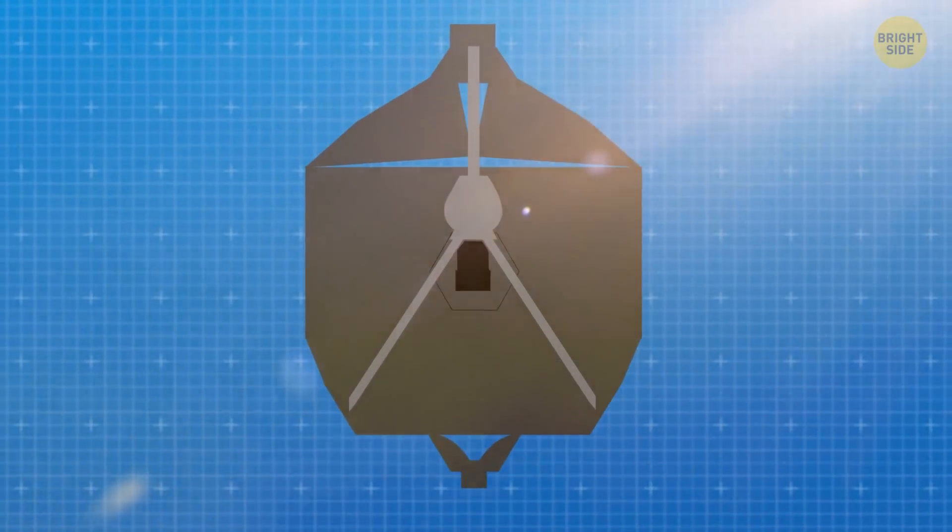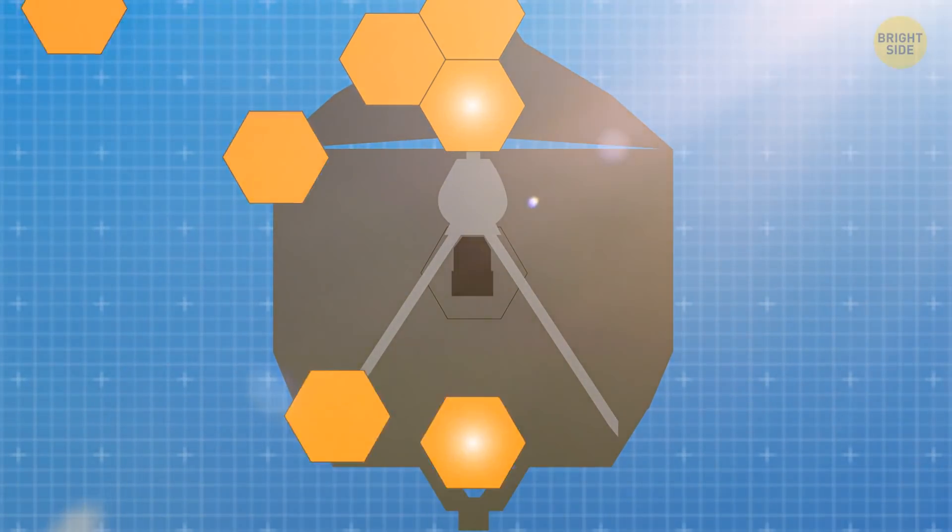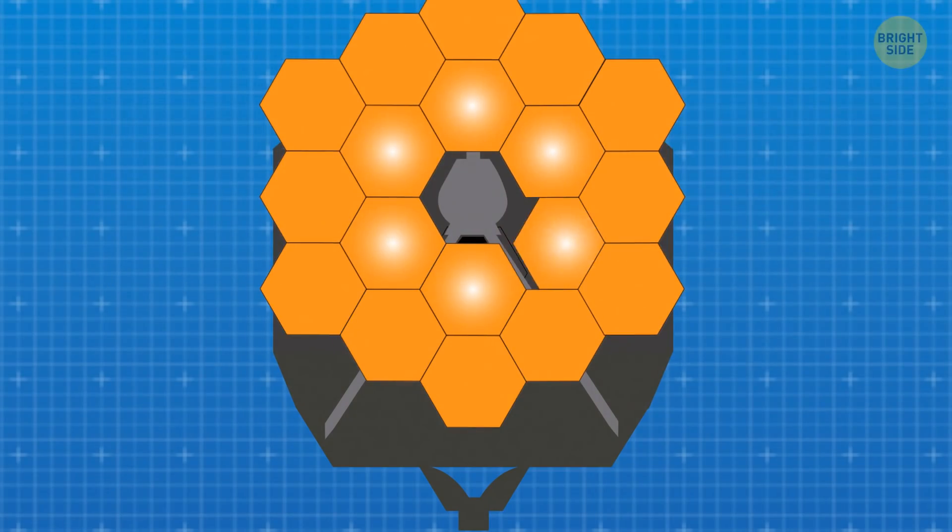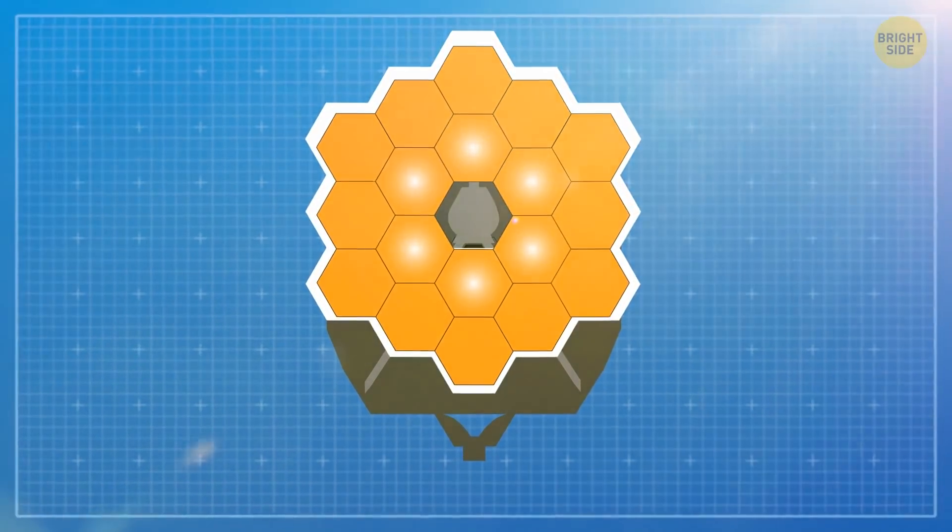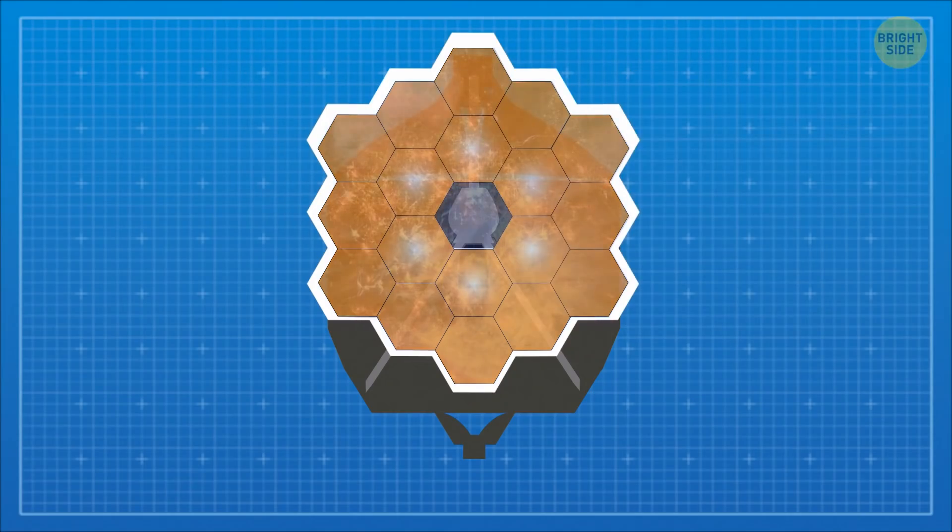Once the mirrors have unfolded, their positions must be adjusted to microscopic-level accuracy so that all 18 mirrors produce a single image. Several tiny motors are attached to each mirror segment to make these adjustments.